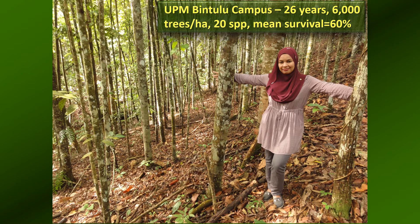This is the UPM Bintulu campus plot — it's 26 years old and the trees were planted at 6,000 per hectare, double the number used for the framework species technique. What you see here is that the trees are competing with each other and they are incredibly thin for trees of 26 years old.